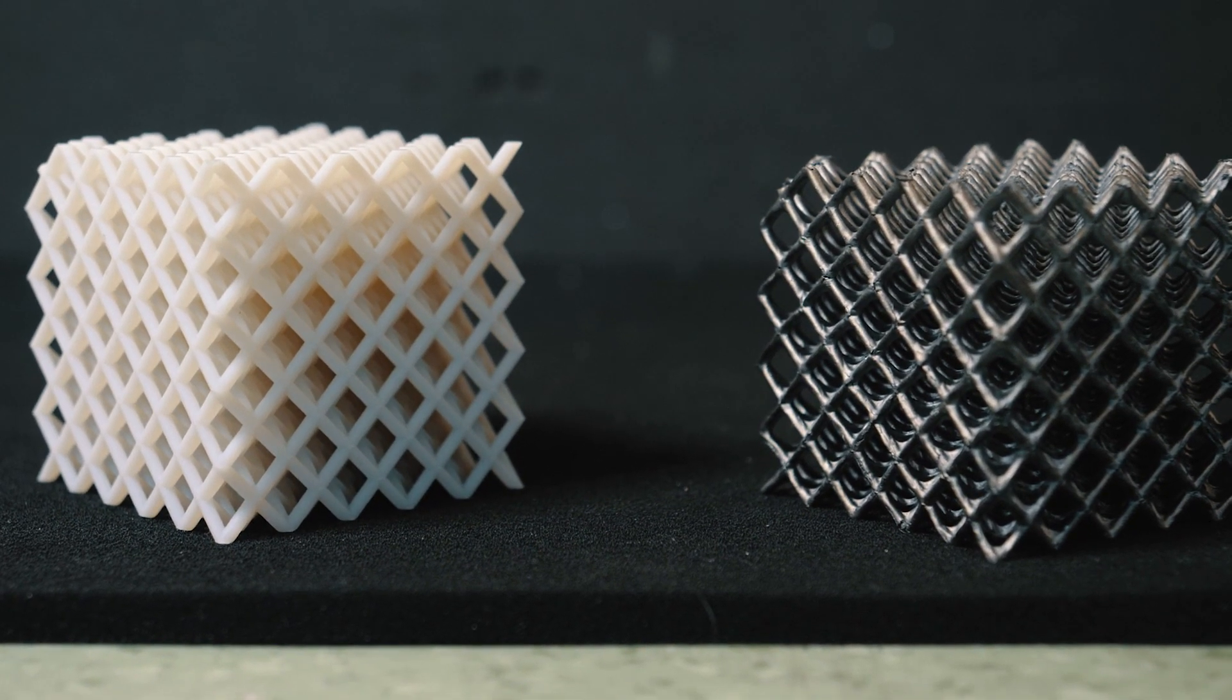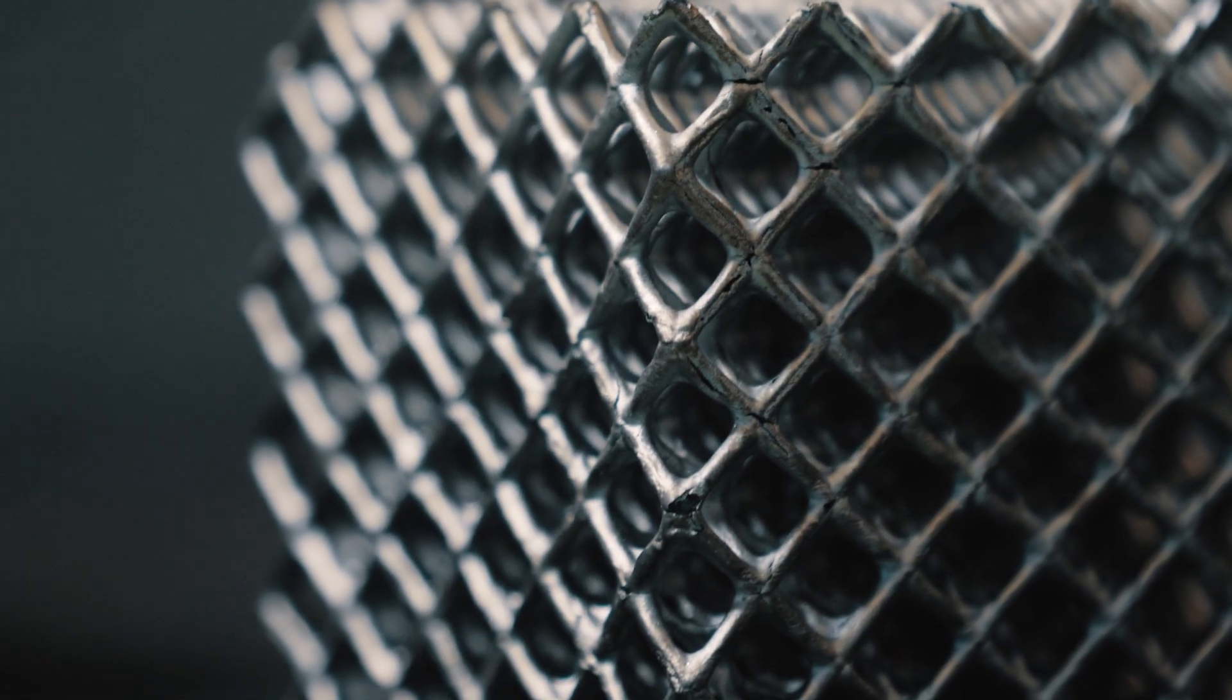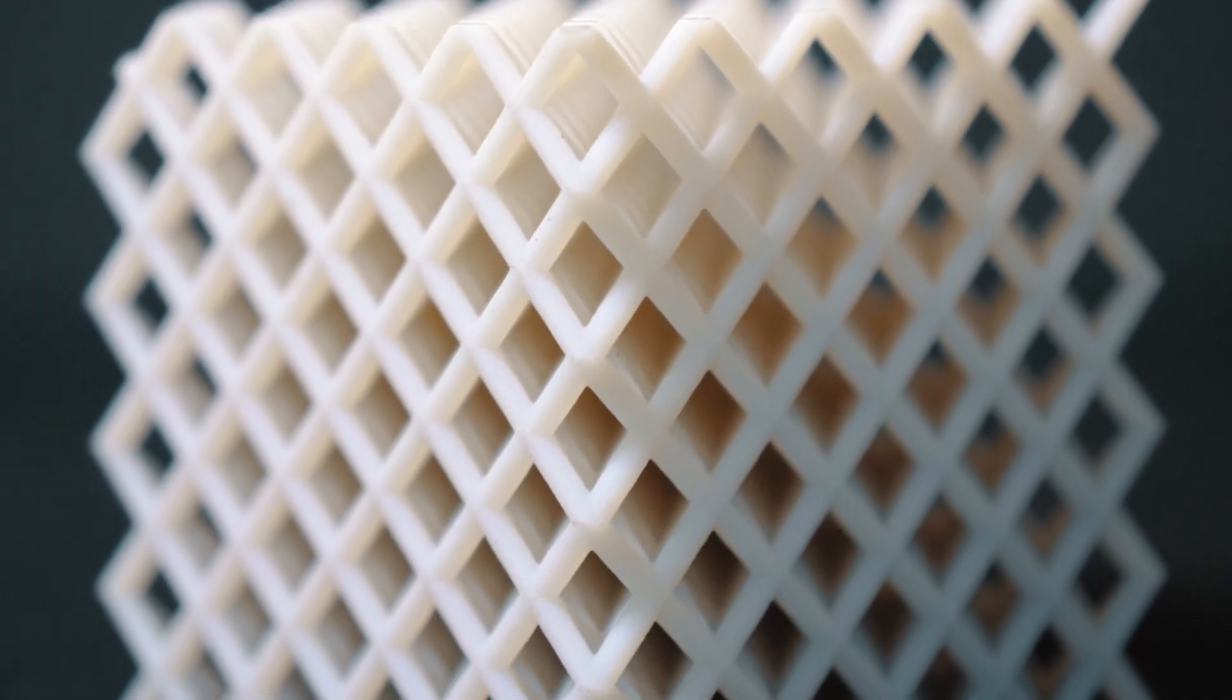Typically when we do this porous material we print a polymeric template on which we can put a ceramic paste which then after heat treatment becomes a ceramic.